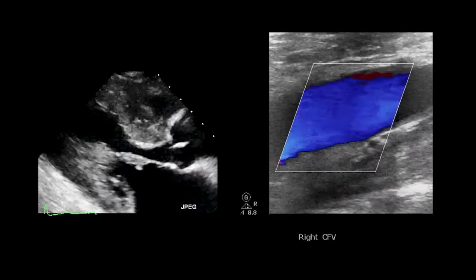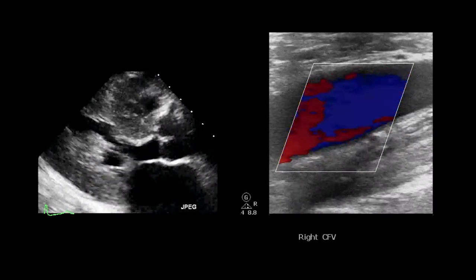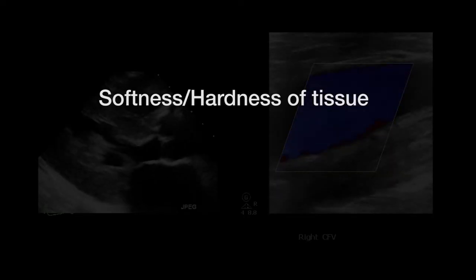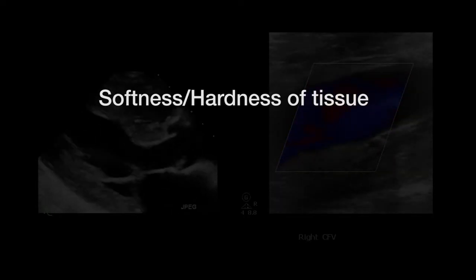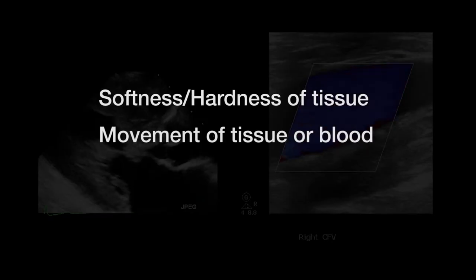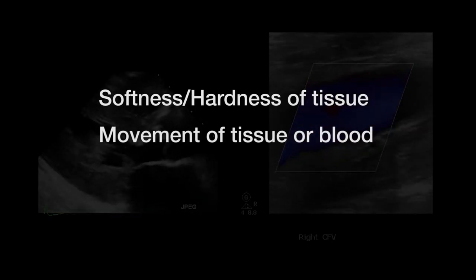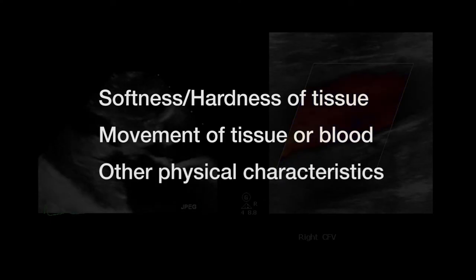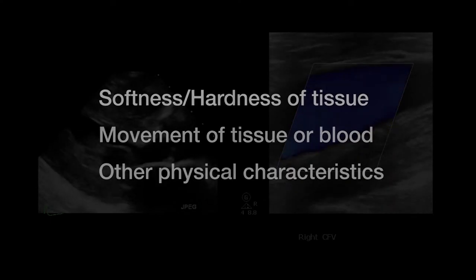In addition to showing anatomic structures, functional ultrasound shows color image maps that can indicate the softness or hardness of specific tissues, movement and velocity of tissue or blood, and other physical characteristics.